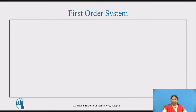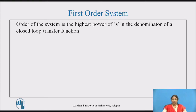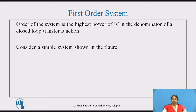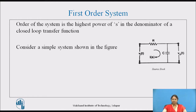Before we see first-order system, let's understand what we mean by order of the system. Order of the system is the highest power of s in the denominator of a closed-loop transfer function. Consider a simple first-order system as shown in the figure, which consists of a resistor and capacitor on the input side and capacitor on the output side of the circuit.